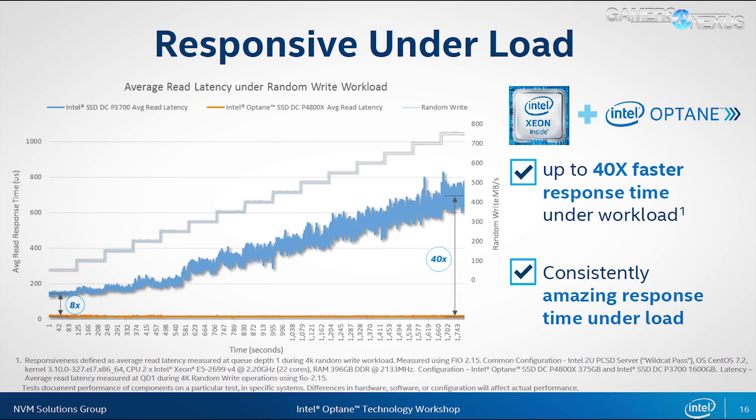What an Optane SSD can do that flash SSDs cannot is increase load while keeping latency the same across that load, until saturation of the data bus. That said, Optane is not built for sequential workloads — if you're pushing massive sequential files back and forth all day, SSDs might serve you better. Optane is targeted at random I/O workloads, with low latency being the primary selling point.